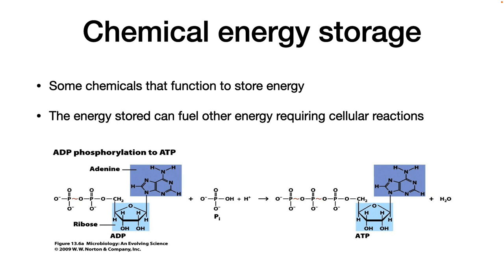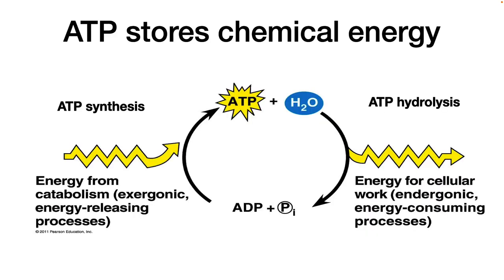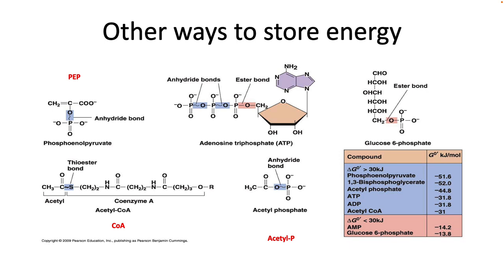How is energy stored in chemical bonds? Some chemicals in cells function to store chemical bond energy, and one of the most common is adenosine triphosphate, ATP. The phosphate chemical bond is high energy, and the cell links its hydrolysis to reactions to help drive them. However, ATP is not the only way to store chemical energy — the cell also stores energy in phosphoenolpyruvate, coenzyme A, and glucose-6-phosphate.